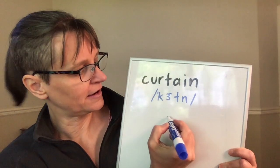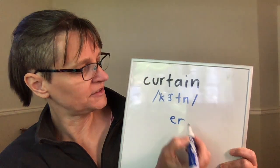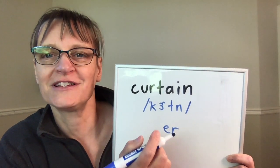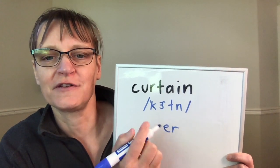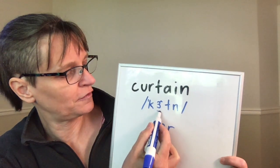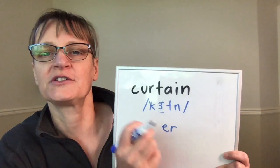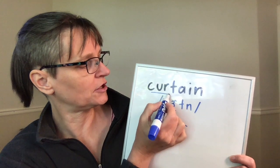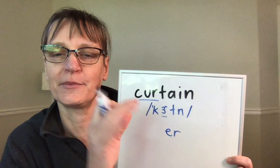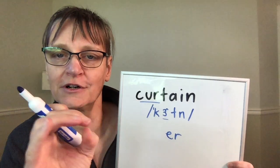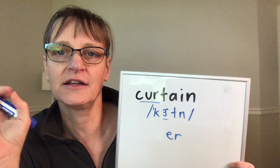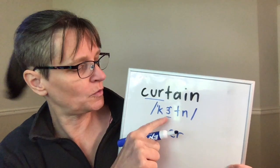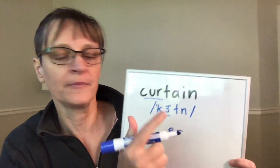I like to write that vowel sound with the letters ER. You'll see it marked in the dictionary lots of different ways. This is the symbol for a stressed ER. The syllable stress in 'curtain' is on the first syllable, so 'cur' is long and stressed and 'tain' is short and unstressed.